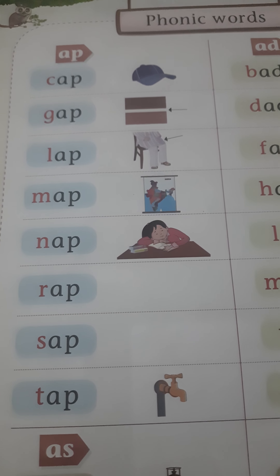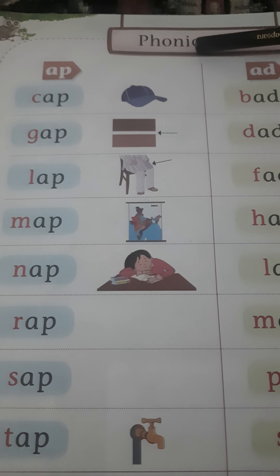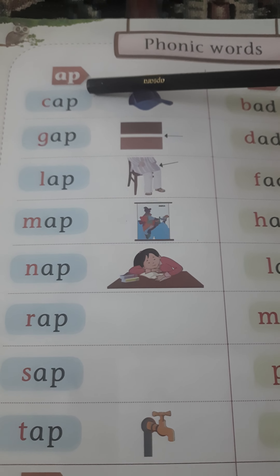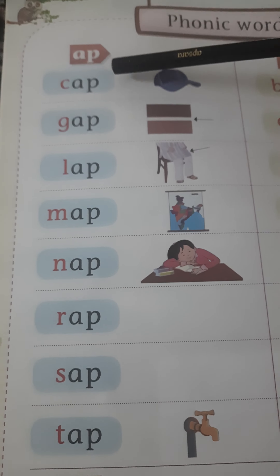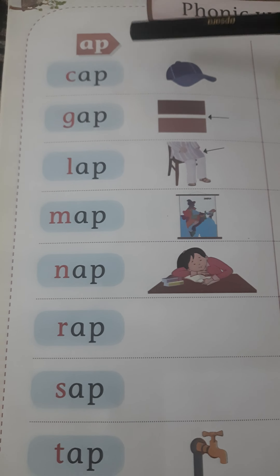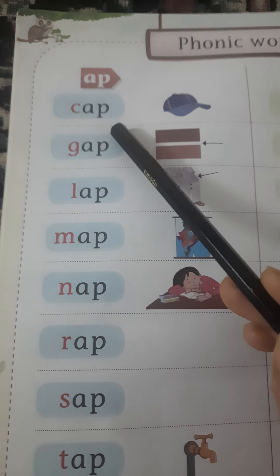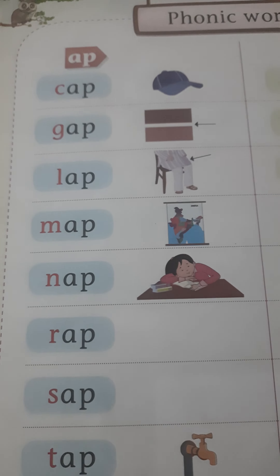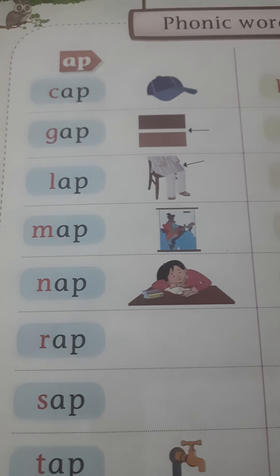Hello dear all, take out your Grafalco book, page number 8 — phonic words. What is the sound of this letter? A, and this is her. In donor ko milakar kaunsi sound bunni? Repeat after me: app, app. The thing is that you have to understand — if you all know the sounds of letters, aapke liye reading bohat easy ho jayegi.